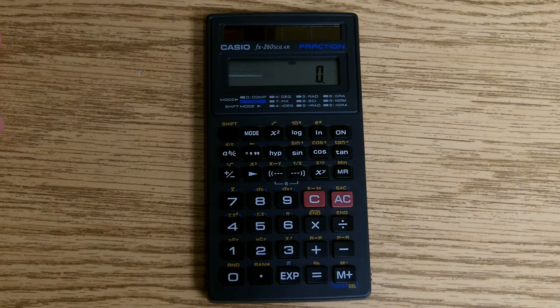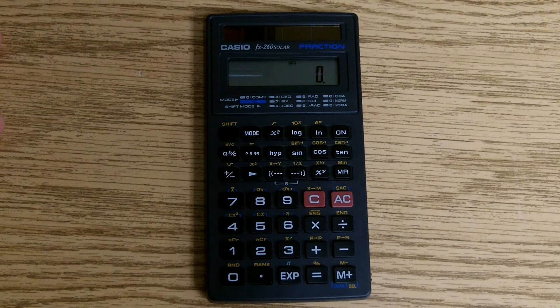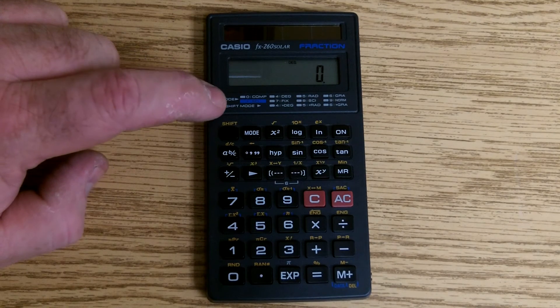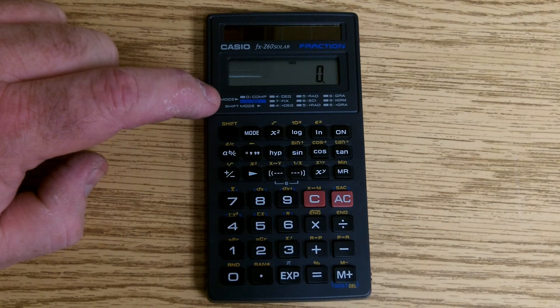To do that, we will use the mode 7, which is the fixed mode. If you look right here on the mode list, you look at number 7, has the letters F, I, X, which is the fixed mode.